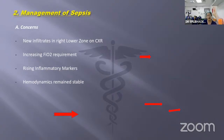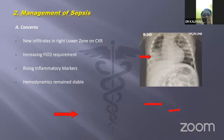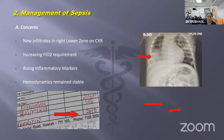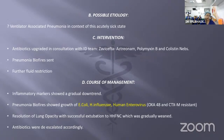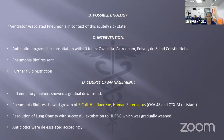A new concern emerged: new infiltrates in the right lower zone on chest X-ray with increasing FiO2 requirements. Ferritin was around 2,450, CRP was increasing, and D-dimer was in the range of 7,000, though hemodynamics remained stable throughout. This was thought to be ventilator-associated pneumonia in the context of this acute sick state. We consulted infectious disease and upgraded antibiotics to cefepime, aztreonam, polymyxin B, and colistin nebulization.